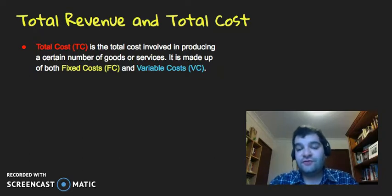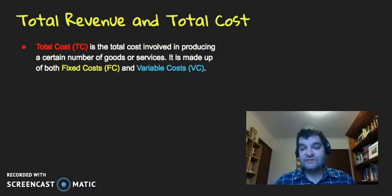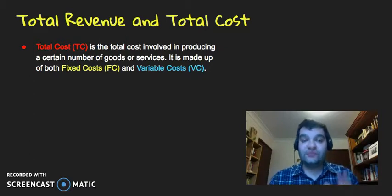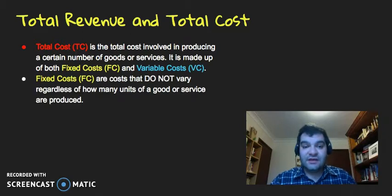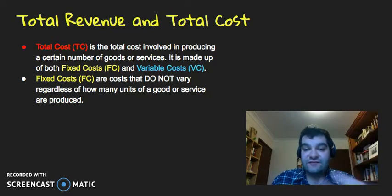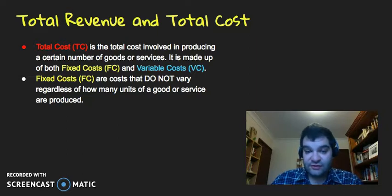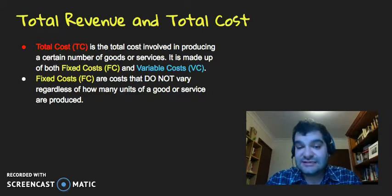Following on from total revenue, we've also got total cost, or TC. This is the total cost involved in producing a certain number of goods or services, and it's made up of two components: fixed costs (FC) and variable costs (VC). Fixed costs are costs that do not vary regardless of how many units are produced. For example, if a business makes one t-shirt they're still paying the same amount of rent and insurance as if they were making a million t-shirts — it doesn't change at all.